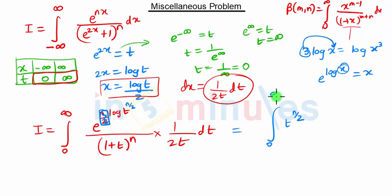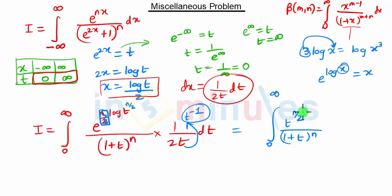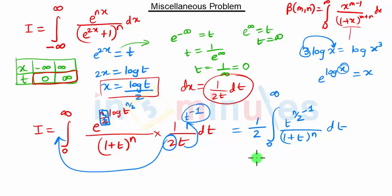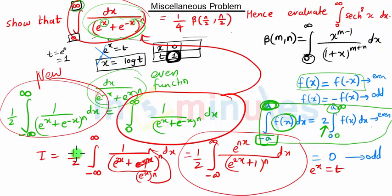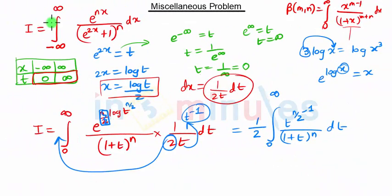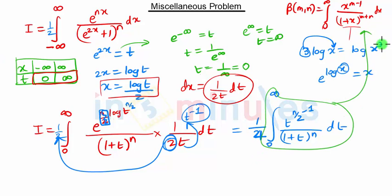Integration from 0 to infinity with t raised to n/2 in the numerator and 1 plus t the whole raised to n in the denominator. This t goes to the numerator as t raised to minus 1, so combined we get t raised to n/2 minus 1 into dt. The factor of 2 is constant and can be taken out as 1 upon 2. We also have a half already present, so this half multiplied by the 2 gives 1 upon 4.